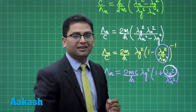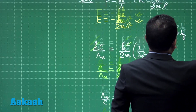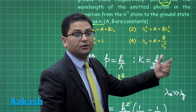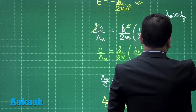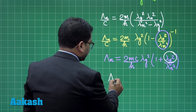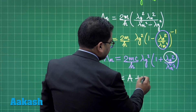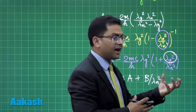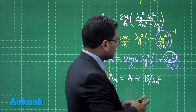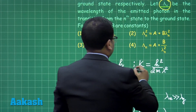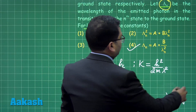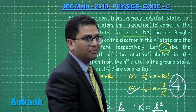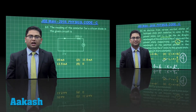Now we are almost done. λg can be treated as a constant because it is the specific de Broglie wavelength at n = 1, while λn is the variable since n is varying. Matching with the options, and since a and b are constants, this expression clearly becomes: Λn = a + b/λn². This matches most appropriately with option number 4. So the correct answer for question number 62 is option number 4.